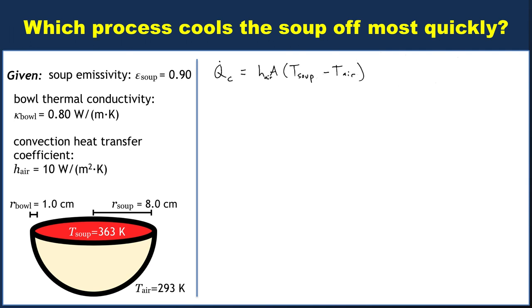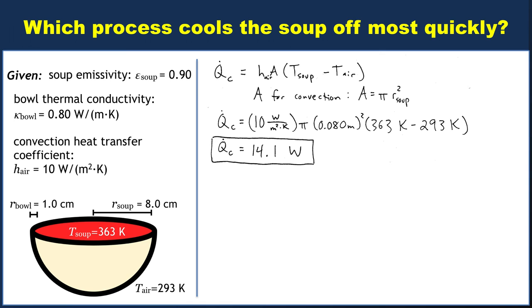So the relevant area is just πr², where again we're picking πr_soup². We know h, we know the two temperatures, so let's plug in our values, and after simplifying things, we should end up with a final power of 14.1 watts.